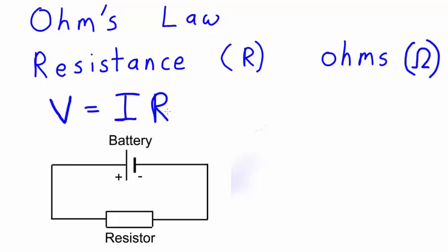This means if we were to look at any circuit, if we knew any of the two quantities - voltage, current and resistance - then we could calculate the third.